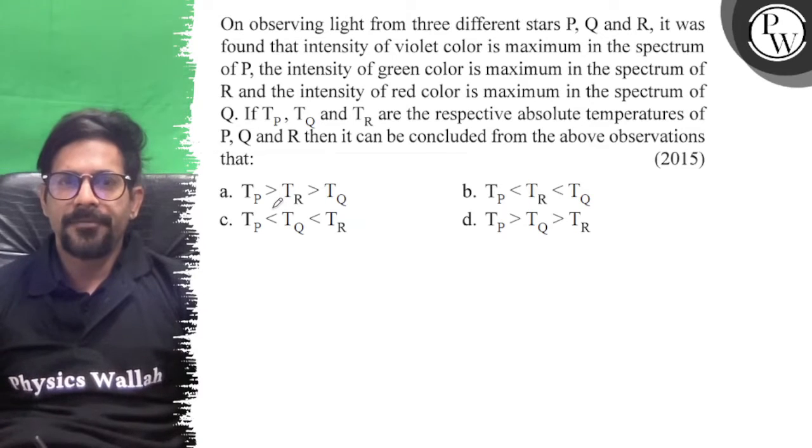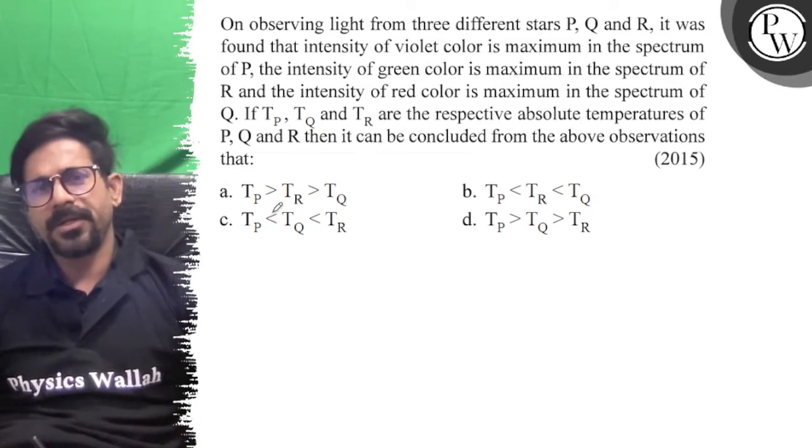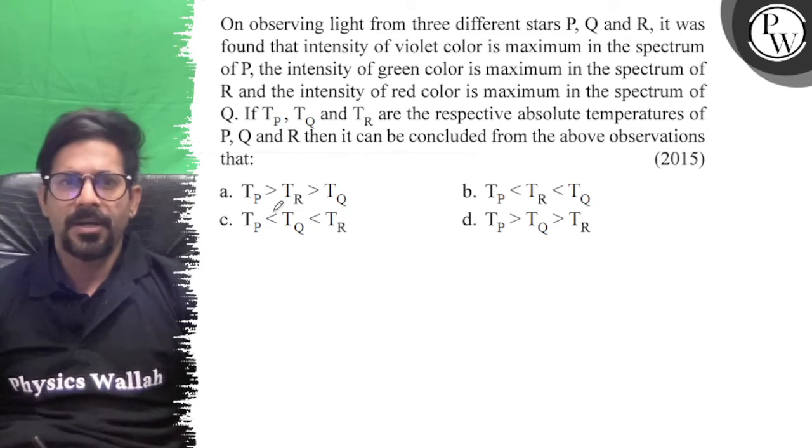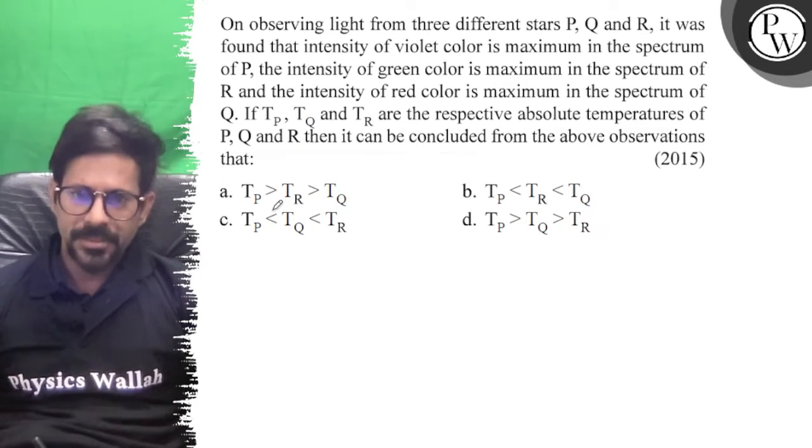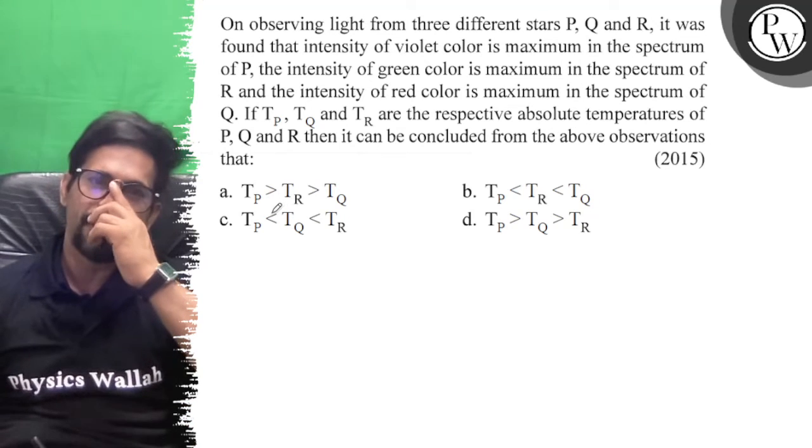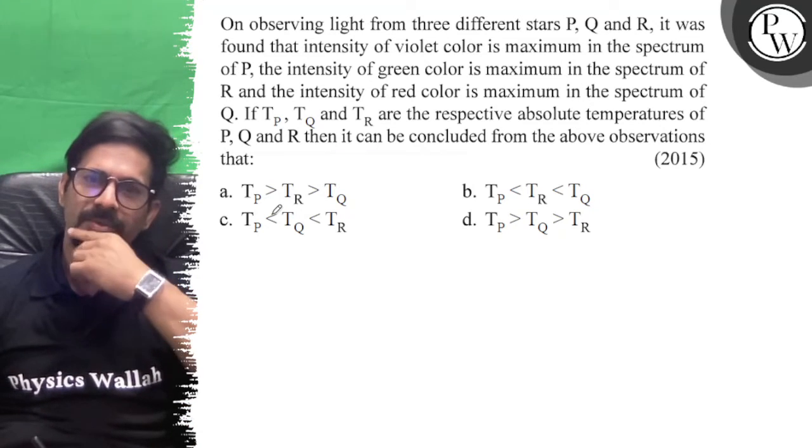Hello, let's see the question. On observing light from three different stars P, Q, and R, it was found that intensity of violet color is maximum in the spectrum of P, the intensity of green color is maximum in the spectrum of R, and the intensity of red color is maximum in the spectrum of Q. If T_P, T_Q, T_R are the respective absolute temperatures, then P, Q, R can be calculated from the above observation.